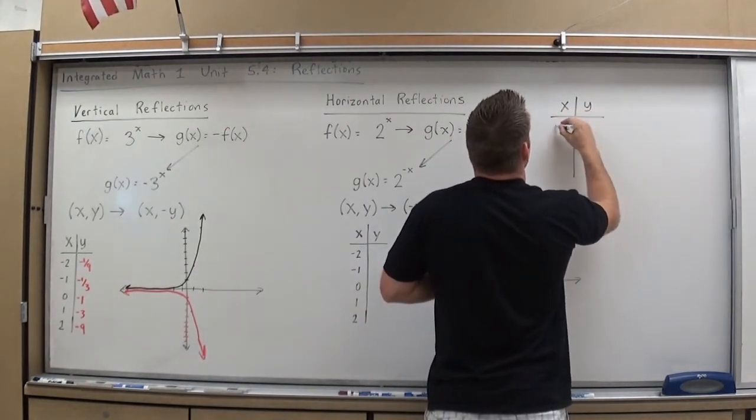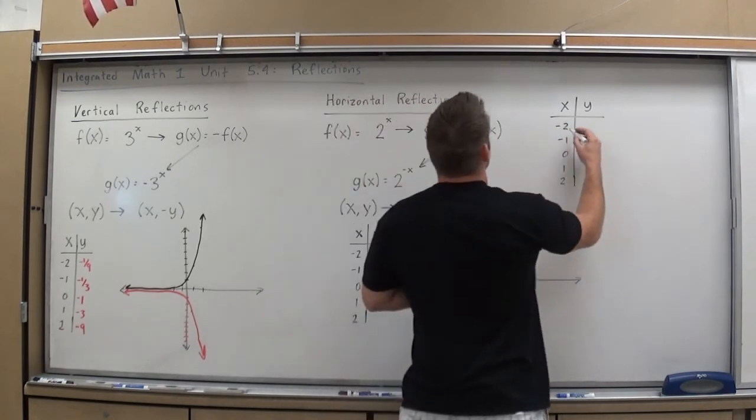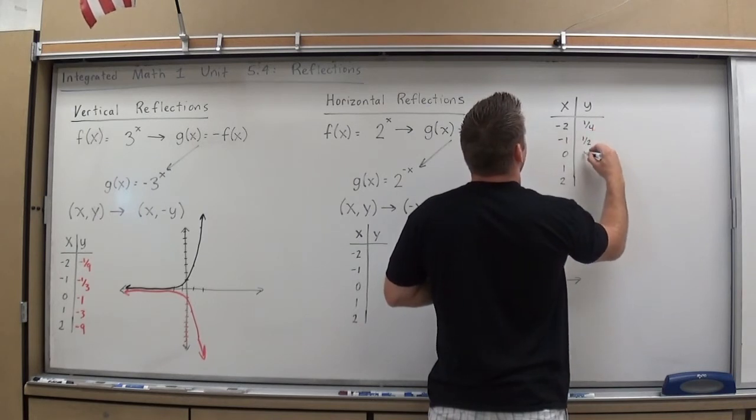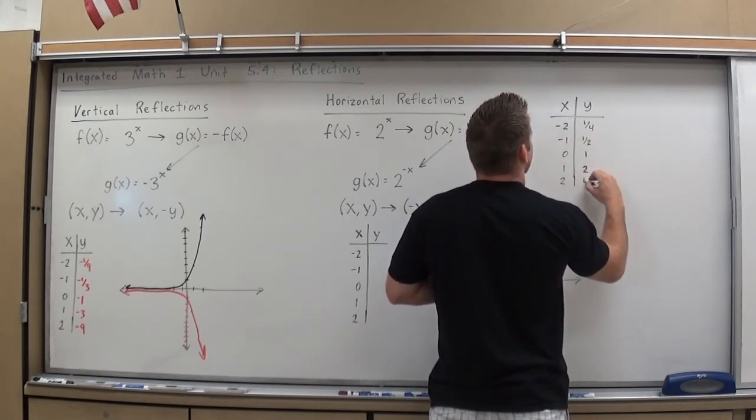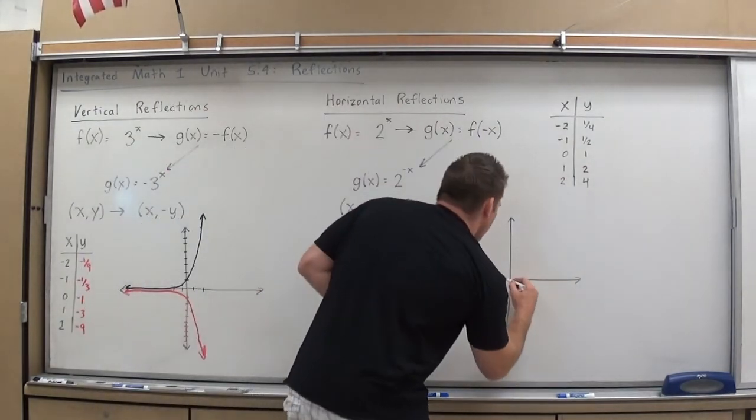We'll go ahead and draw the table for that this time. Negative 2, negative 1, 0, 1, 2. For the original function, 2 to the negative 2 is 1 fourth, 2 to the negative 1 is 1 half, 2 to the 0 is 1, 2 to the 1 is 2, 2 to the 2 is 4. So our original function would look like this.